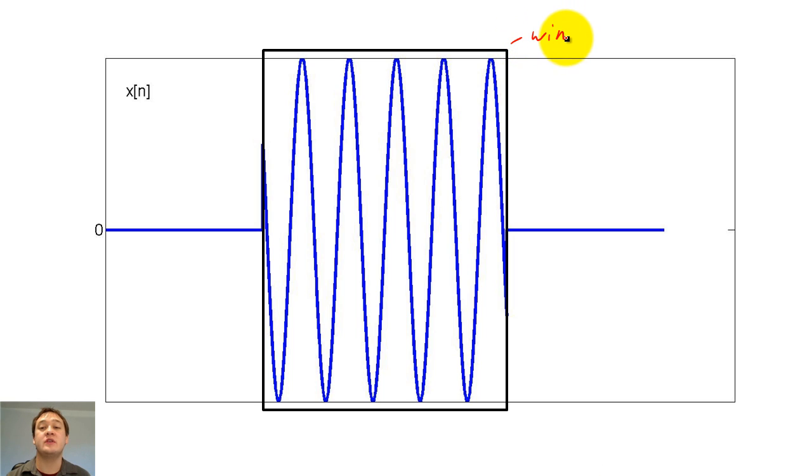By windowing x of n, we are implicitly assuming that every sample outside of the window is zero. The DFT of this windowed x of n would look like this.